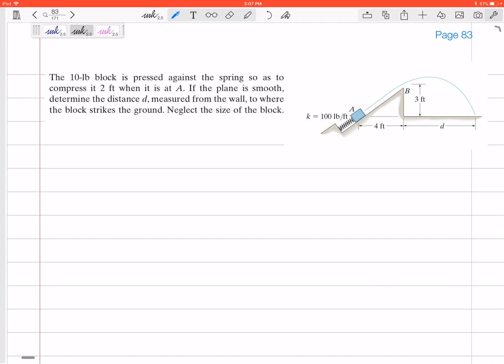This problem was actually in the work energy section, not the conservation of energy. So I'm going to work this out using the work energy approach, using the fact that the sum of all work, including springs and gravity, equals only delta T, the change in kinetic energy.